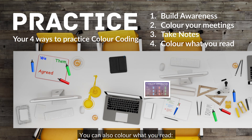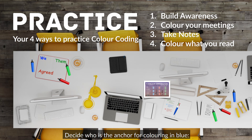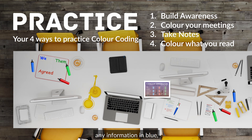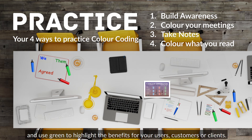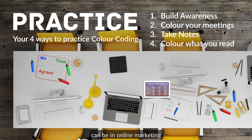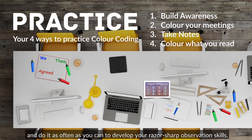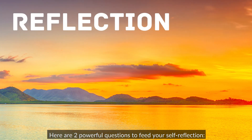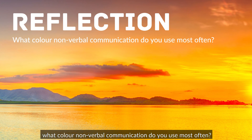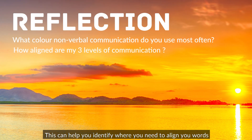You can also colour code what you read: reports, emails, speeches, copy for websites, or social media content. Decide who is the anchor for colouring in blue — me or we as an organisation. Then highlight in red the call-to-action content, any information in blue, and use green to highlight the benefits for your users, customers, or clients. You'll notice how powerful green copy and visuals can be in online marketing. Do it for yourself, do it for others, and do it as often as you can to develop your razor-sharp observation skills. Beyond the words you write and speak, what colour non-verbal communication do you use most often? This can help you identify where you need to align your words with your actions.